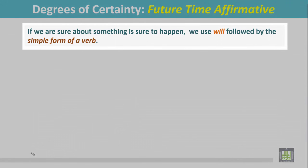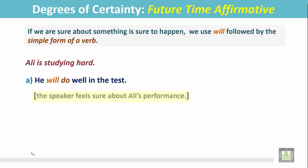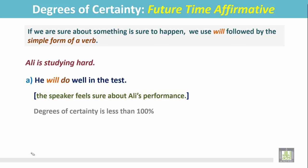If we are sure about something that is sure to happen, we use 'will,' which is followed by the simple form of a verb. Example: Ali is studying hard — he will do well in the test. In this situation, the speaker feels sure about Ali's performance, and the degree of certainty is less than 100 percent.